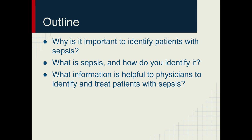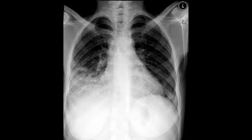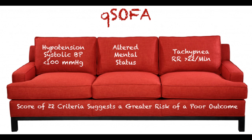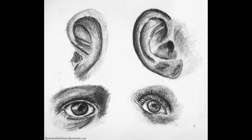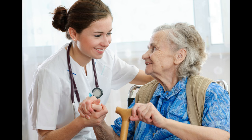In review, we've discussed why sepsis is an important problem, we've defined and explained sepsis, we've discussed how to identify it, and we've discussed some of the information that doctors would like to know when you call them. When you see a patient with a suspected infection, remember to ask yourself whether this patient has sepsis. You're our eyes and ears in the nursing home, so we depend upon your judgment to identify patients with sepsis. Go out there and save some lives.